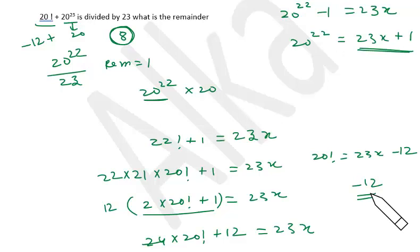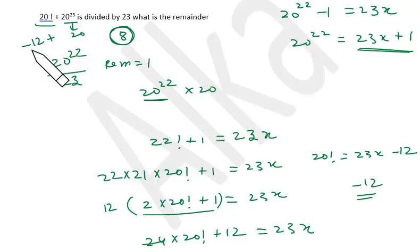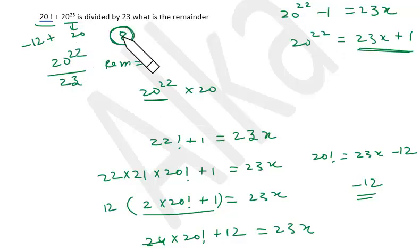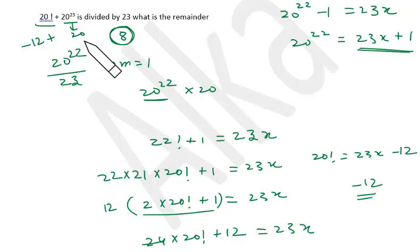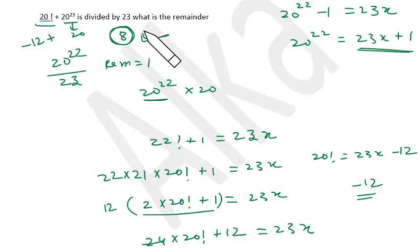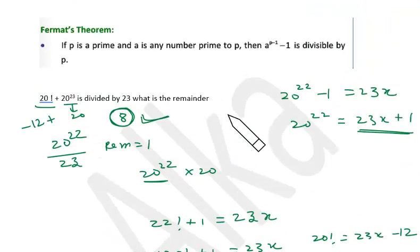You can also convert the negative remainder: divisor minus 12 gives 23 minus 12 equals 11, and 11 plus 20 equals 31. Dividing 31 by 23 gives remainder 8 — same answer either way. So the final answer is 8, which is a beautiful combination of Fermat's theorem and Wilson's theorem.